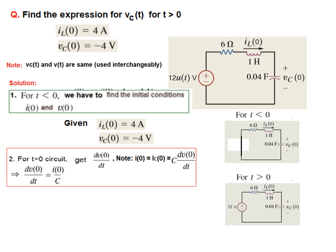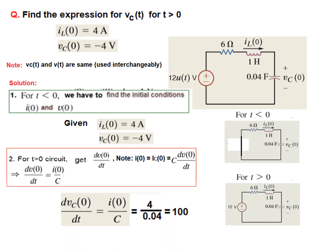Now let's go to the second step. For T greater than 0 we have to get dV0/dt. Note that since this is a series circuit, the inductor current and the capacitor current are the same. So I(0) or I_L(0) is equal to I_C(0). And I_C is given by C dV/dt, so it will be written as C dV0/dt. From these two we can derive that dV0/dt equals I(0)/C. Plugging in I(0) as 4 ampere and C as 0.04, dV0/dt is 100.